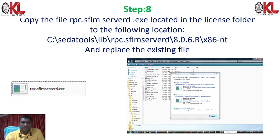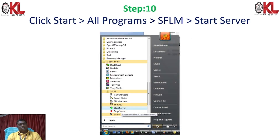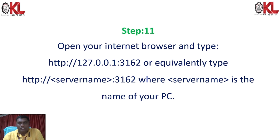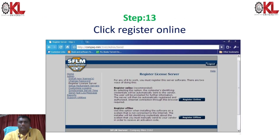Once you replace the existing file, restart your computer in normal mode. Go again to All Programs, then SFLM, and now Start Server License will be available — click it. Open your internet browser, type the server name and your PC name. It will prompt for the password you entered earlier. Log in and click Register Online to proceed with online registration.